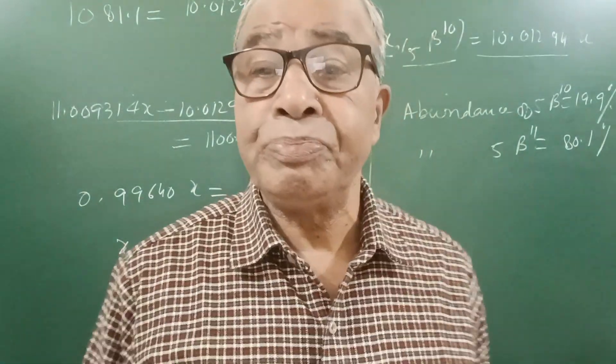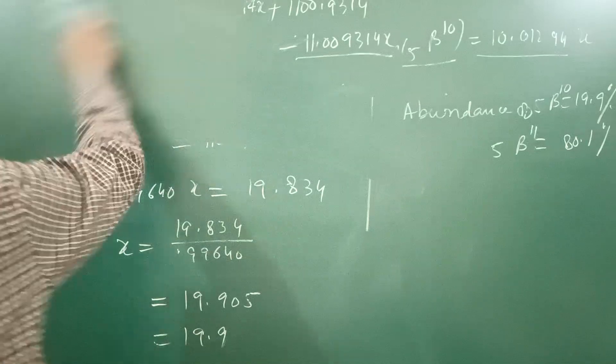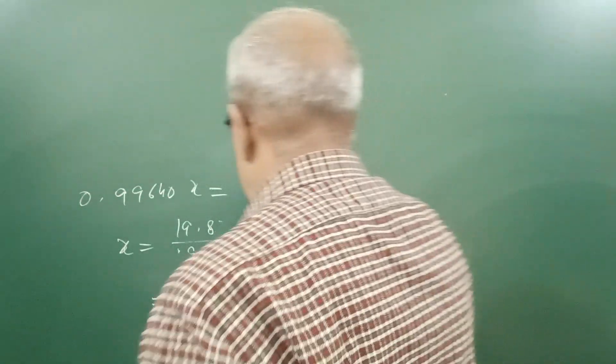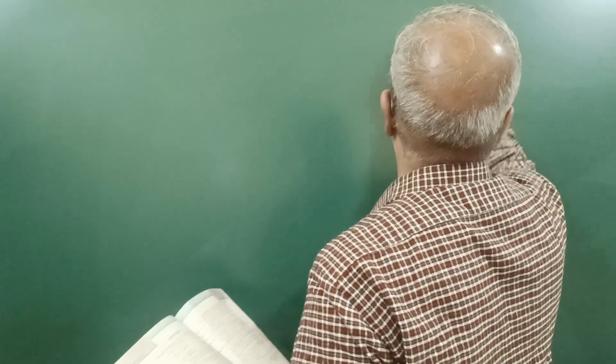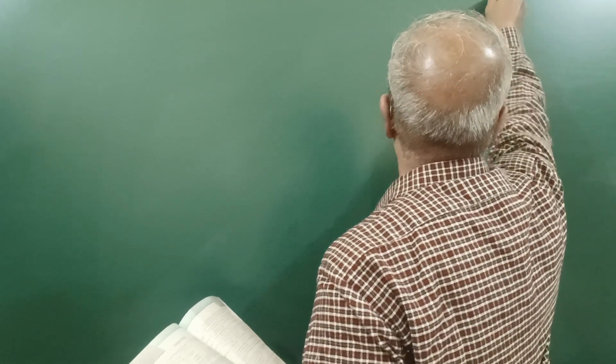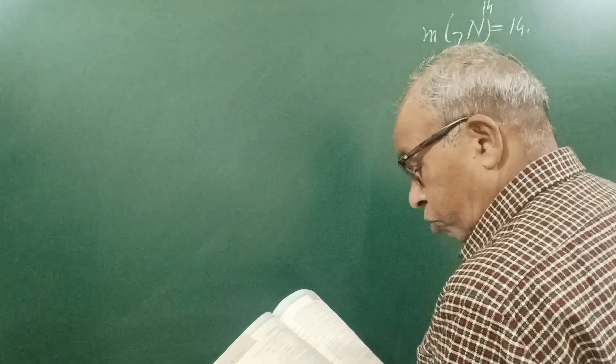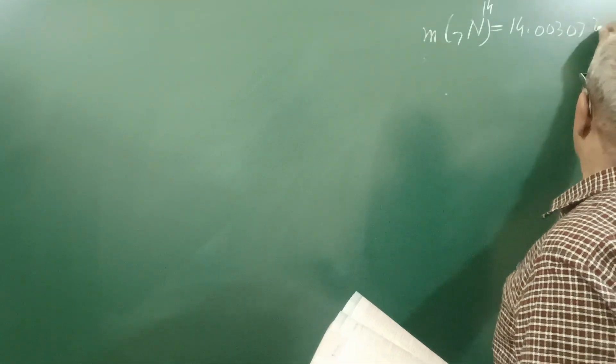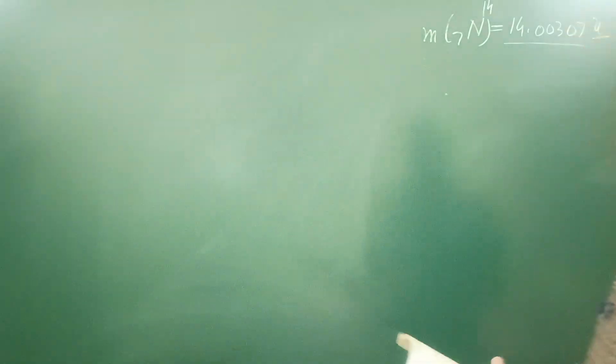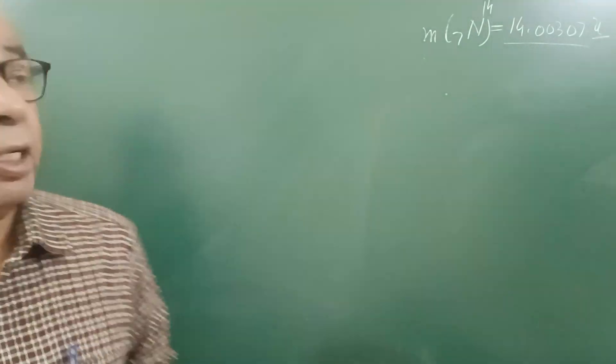Now there is another interesting question and very important also for class 12 students. This is most important, 99% chance is there to be asked in the board exam. Find the binding energy of nitrogen nucleus. You are given here mass of 7N14 equal to 14.00307U atomic mass unit. Mass of nitrogen atom, not nucleus. To find the binding energy.